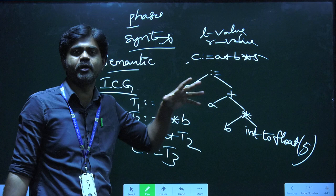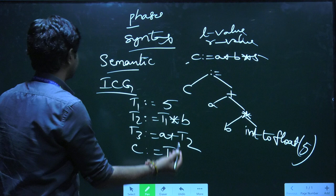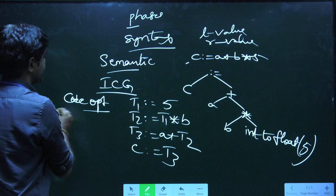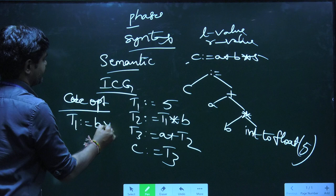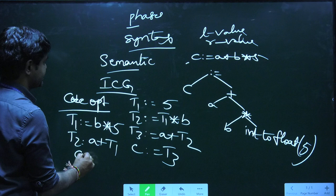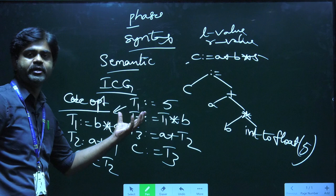Code optimization is used to reduce the number of lines of code. In code optimization, T1 equal to B into 5, T2 equal to A plus T1, and C equal to T2. We have reduced 4 lines of code into 3 lines of code. This is called code optimization.